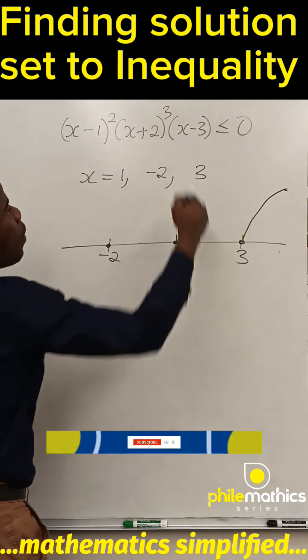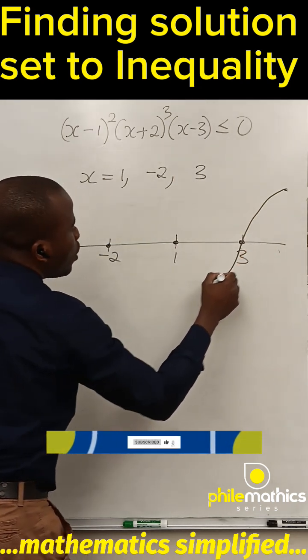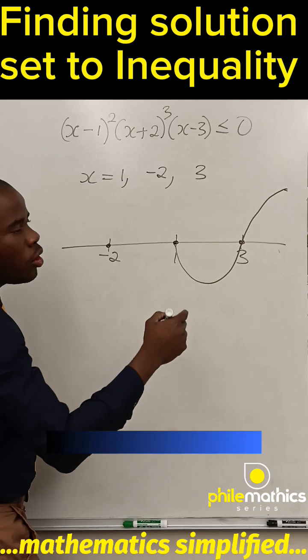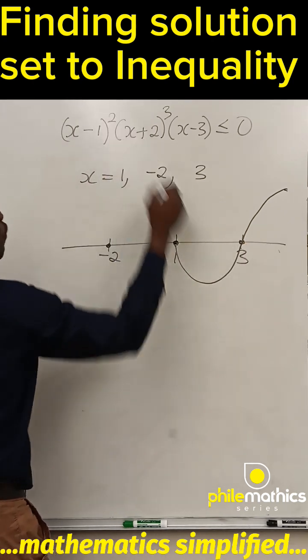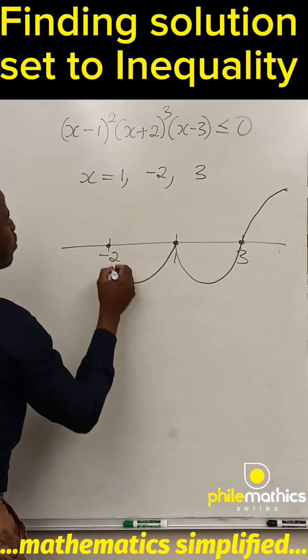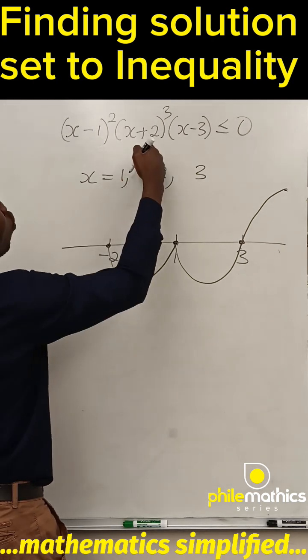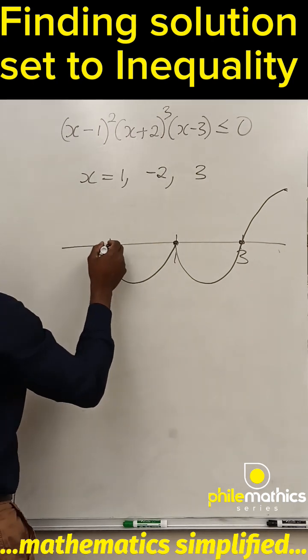At three, the power is odd, it crosses. So when it's odd it crosses, when it's even it doesn't cross the line. At one it is even, it doesn't cross the line. At -2 it is odd, it crosses the line.